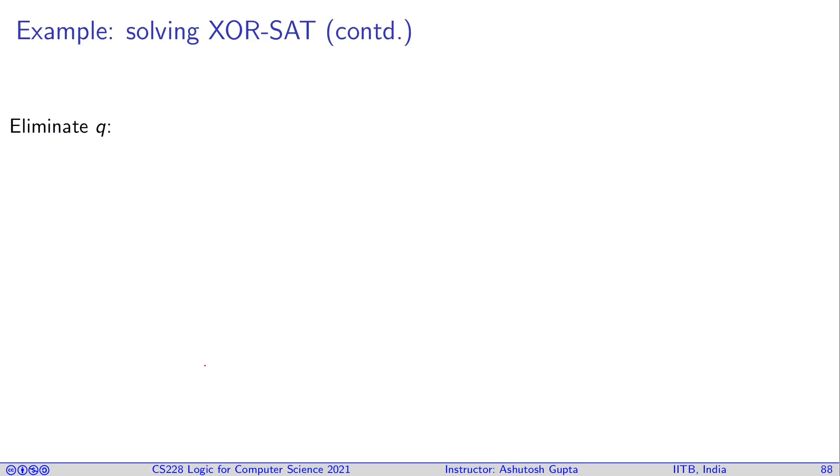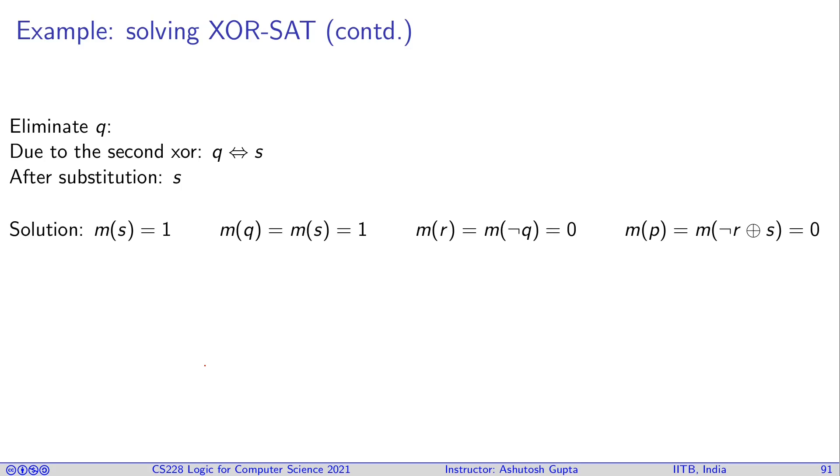We can further eliminate q – we have q equals s. This is the only variable left, and we can assign it to 1. Since q is equivalent to s, we assign q to 1. Since r equals ¬q, it's assigned to 0. And p is equivalent to ¬r ⊕ s, so it's assigned to 0. This is the way you can solve XOR-SAT.